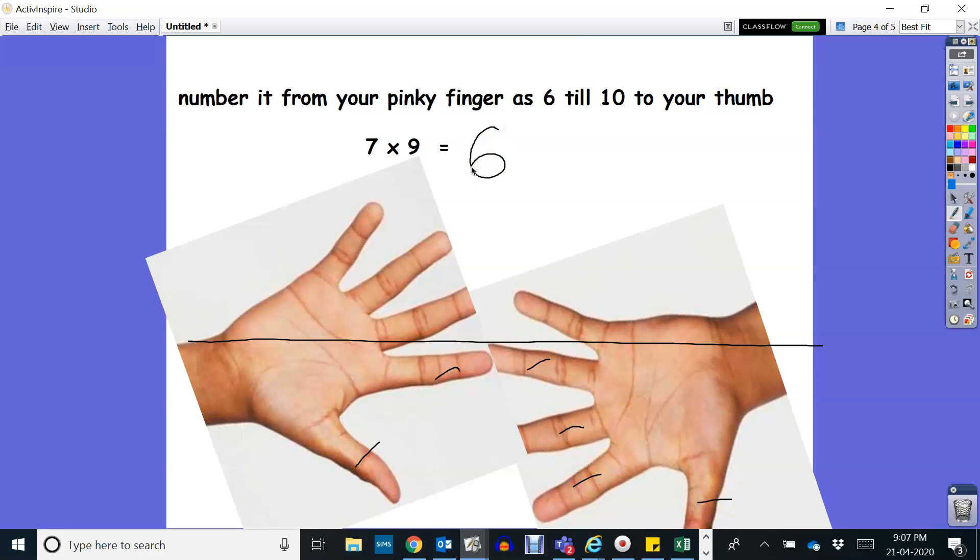And on the top, 3 and 1. So 3 times 1 is 3. So the answer is 63.